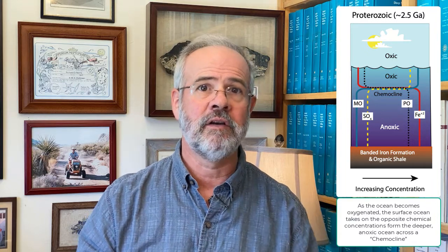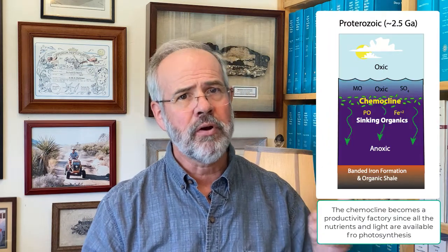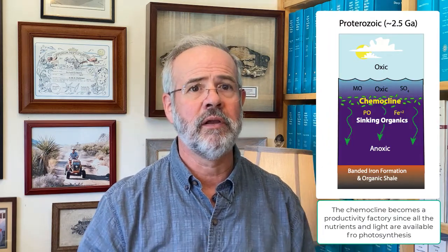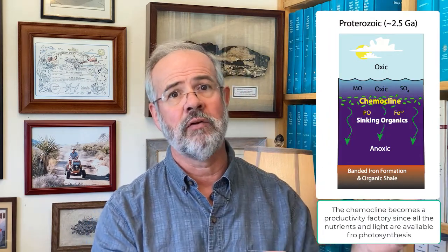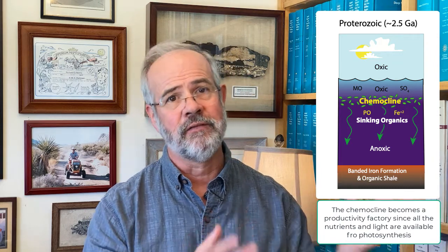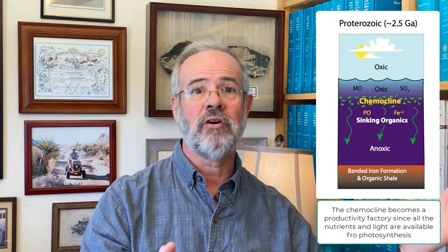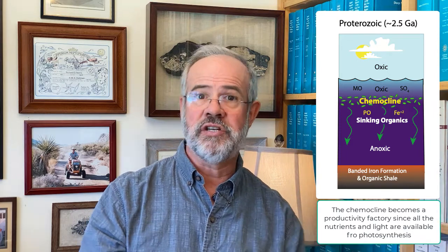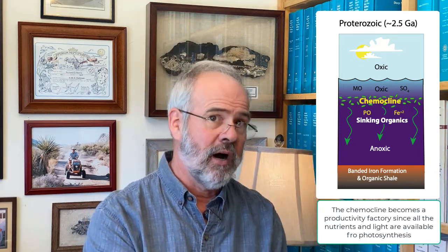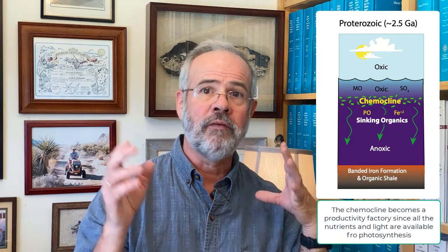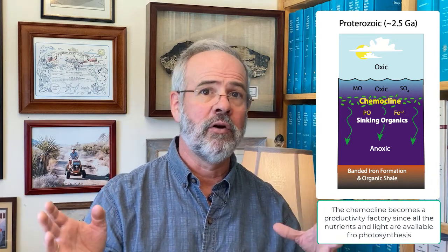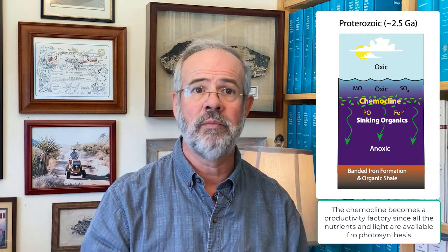The crossover point between an oxic surface ocean and a hypoxic or anoxic deep ocean is called the chemocline. The Proterozoic ocean, around 2.5 billion years ago, had a strong, shallow chemocline, which was ideal for the production of organic matter. The chemocline had everything a microbe could want. There was oxygen just above the chemocline and no oxygen just below, suitable for both aerobic and anaerobic respiration by different microbial groups.